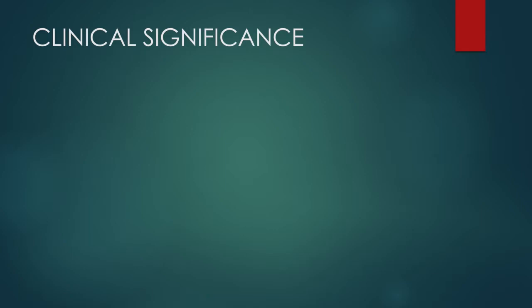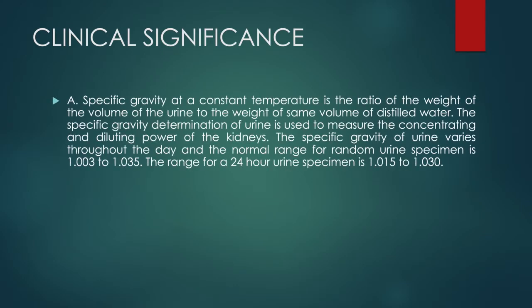Why should we measure specific gravity, and what is its importance? The normal specific gravity varies depending on the type of urine collection. In random urine collection it ranges from 1.003 to 1.035, whereas in 24-hour urine collection it ranges from 1.015 to 1.030.